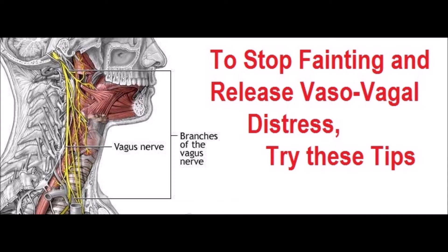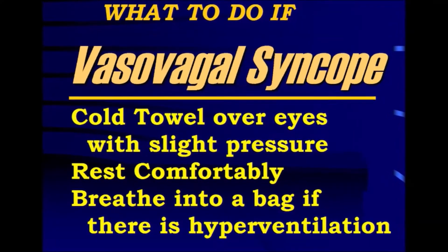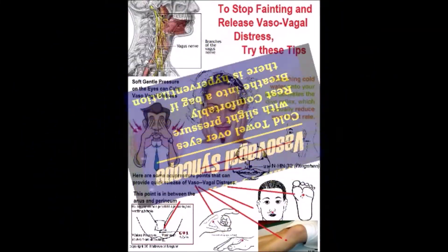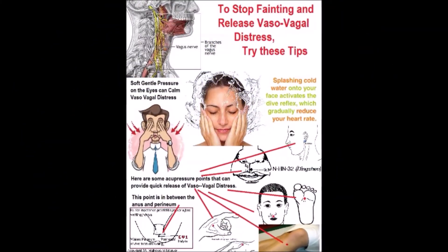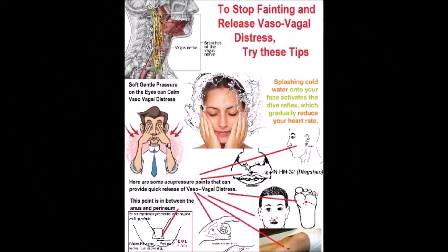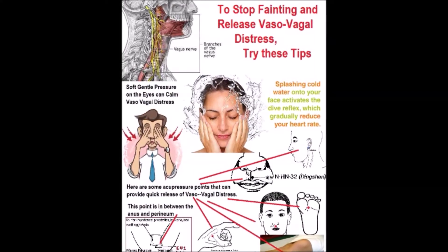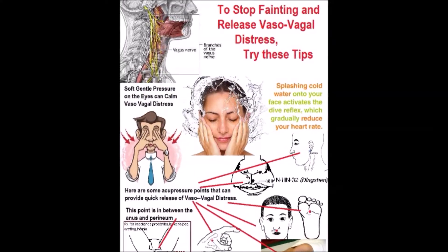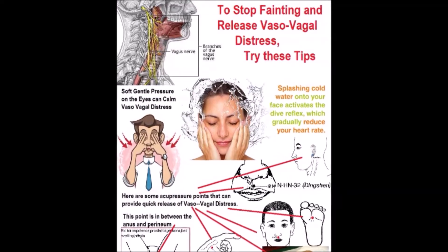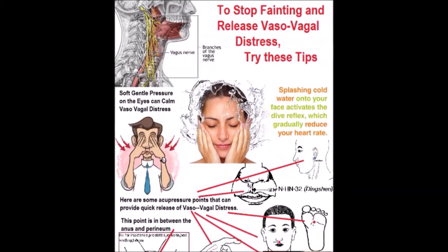When the person starts to feel faint and they get that clammy skin, a little nausea, sweating — you know they're in vasovagal distress. Here are some tips for what you can do. A cold towel over the eyes, a little bit of water on the face. Here are some acupressure points. You can also apply gentle pressure on the eyes — with the lids closed, of course — which will help to stimulate a balance in the vagus nerve.